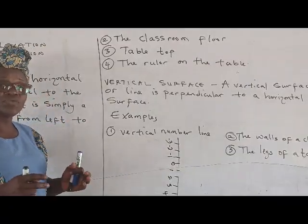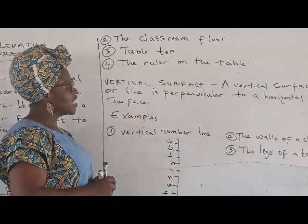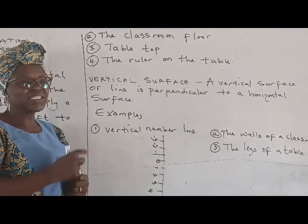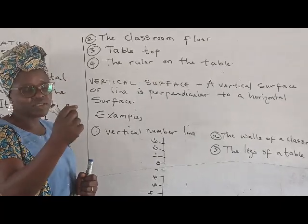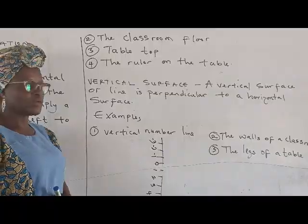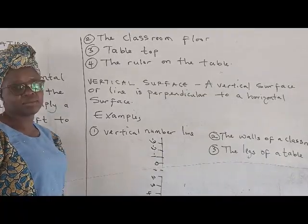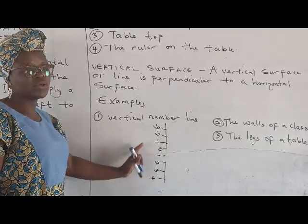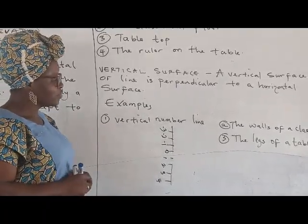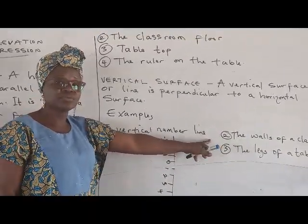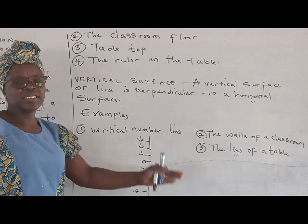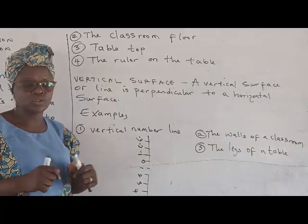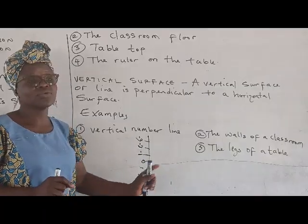Another type of surface we'll be looking at is the vertical surface. A vertical surface or line is perpendicular to a horizontal surface — meaning it meets the horizontal surface at 90 degrees. Examples of vertical surfaces include a vertical number line, like the Y-axis on your graph. Another example is the walls of the classroom, which go from up to down and meet the floor at 90 degrees. The legs attached to your table are also good examples of vertical surfaces.